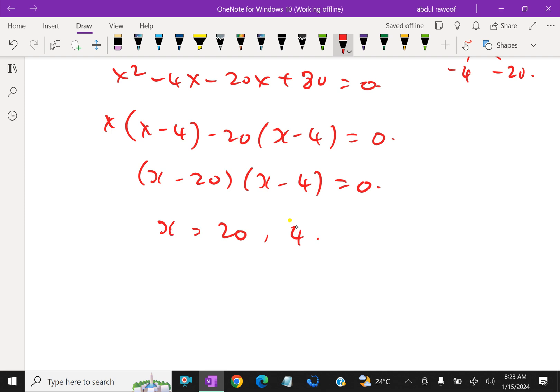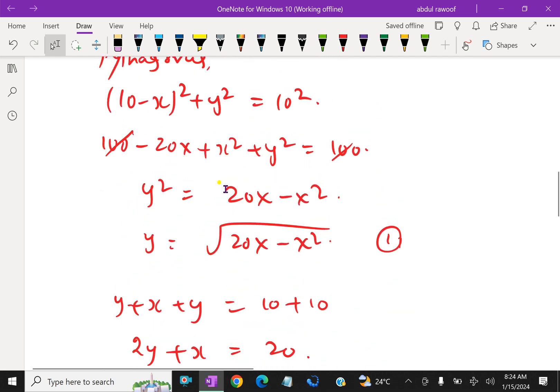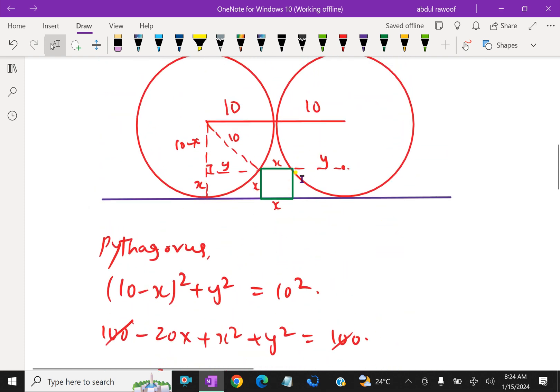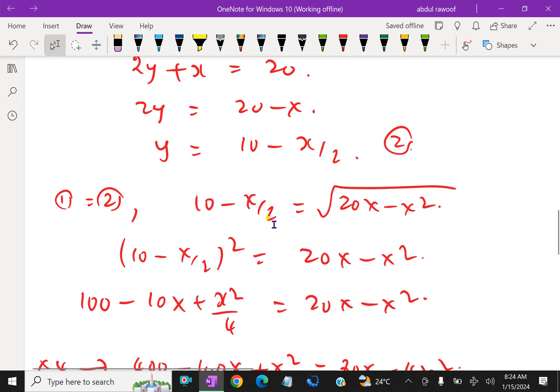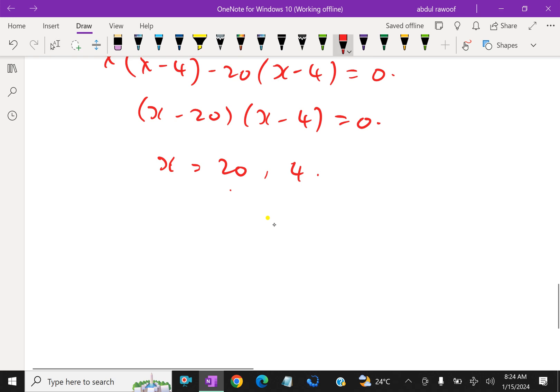From this we get x equals 20 or x equals 4. Look at here, this x is 20 not possible because this together 10 plus 10 is 20. Here y plus x plus y equals 20, so x should not be 20. Therefore this value is not possible. Therefore x equals 4.